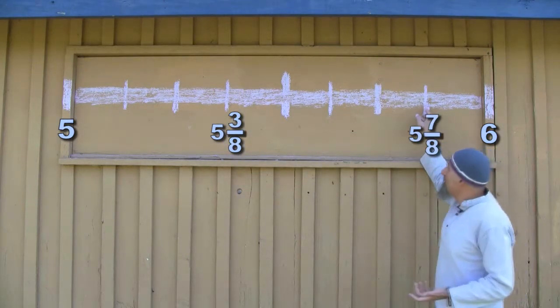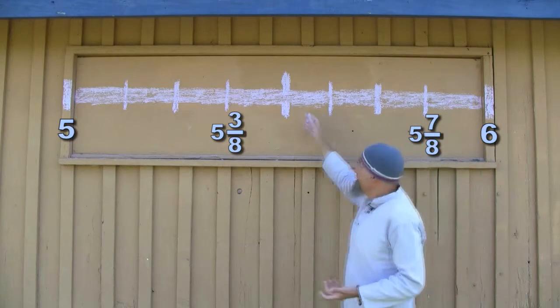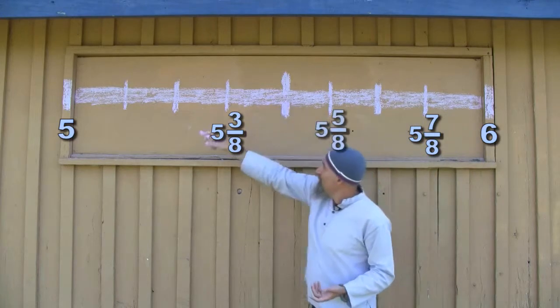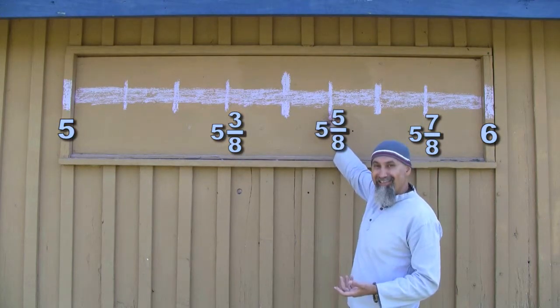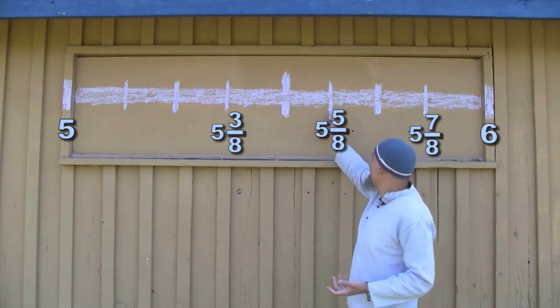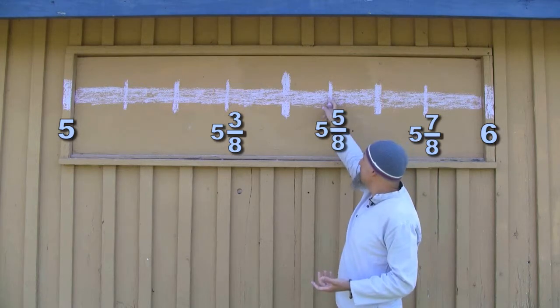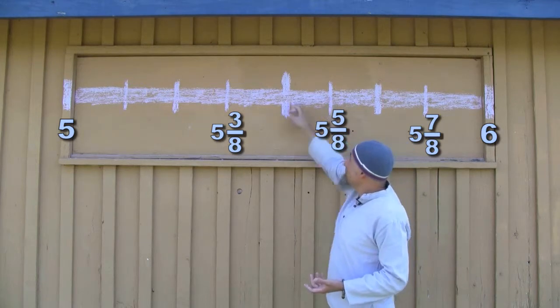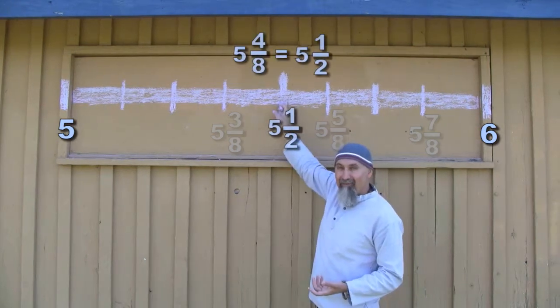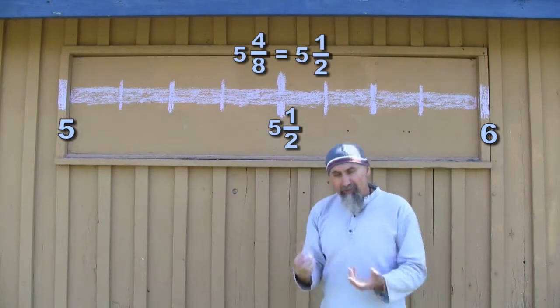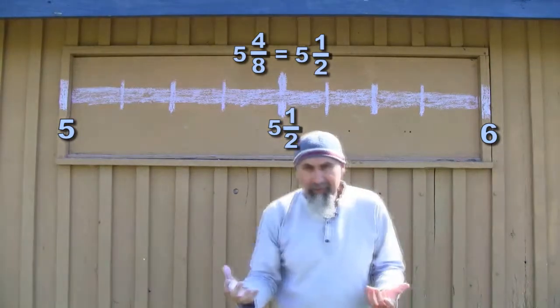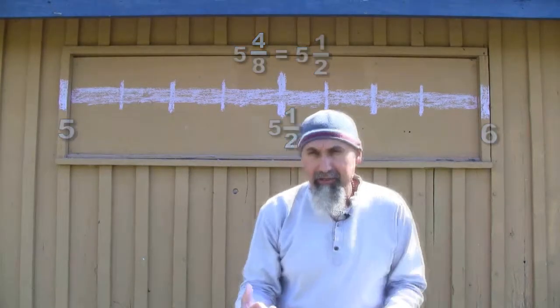Five and five-eighths: one, two, three, four, five — over here. So five and five-eighths would be here, and this would be five and a half. If the fraction is reducible — if it's even — you end up reducing it.